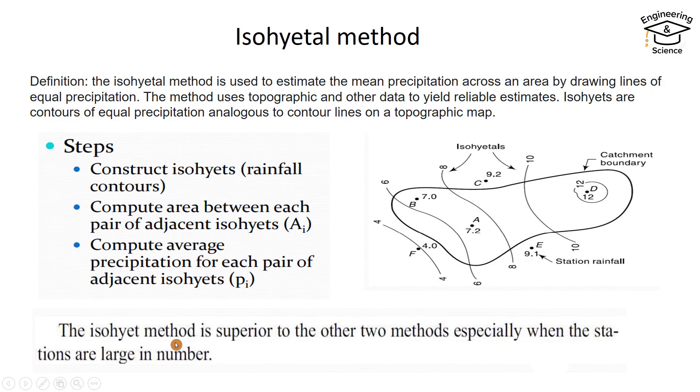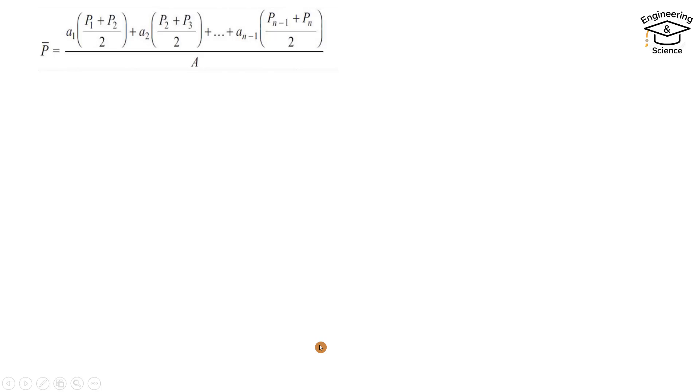We use this equation: area multiply average precipitation plus area 2 multiply average precipitation for area 2, and so on, over total area. Now let's solve an example.